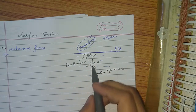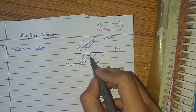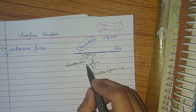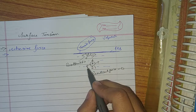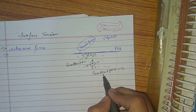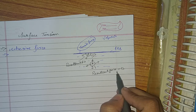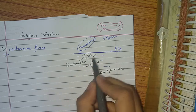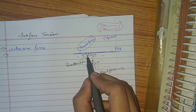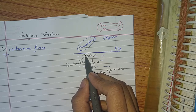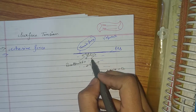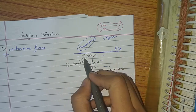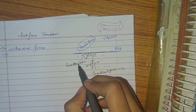Now suppose we take molecule A and molecule B. Molecule A is surrounded by liquid on all sides, so there will be a net cohesive force equal to zero. But for molecule B, as it is surrounded by liquid only below the free liquid surface, there will be a net cohesive force.